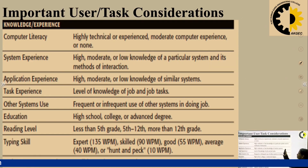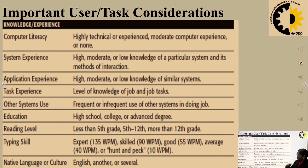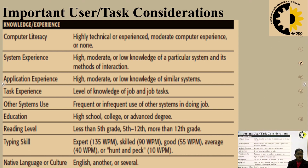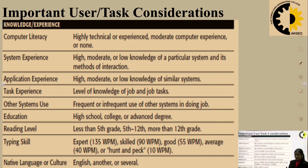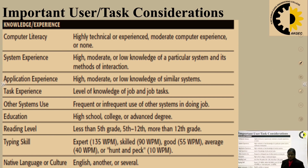The important user task considerations are: first, computer literacy — whether the user is highly technical, has moderate experience, or none. Second, system experience — may be high, moderate, or low depending on knowledge of computer and its methods of interaction. Third, application experience — whether the user has used that particular application frequently (high), moderately, or rarely (low). Fourth, task experience — whether the user has worked on the task or not, representing the level of knowledge of job tasks. Fifth, other system use — frequency of use of other systems in doing the job.